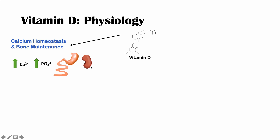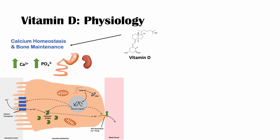How does calcitriol do this in the gastrointestinal system? I have an entire lesson on this pathway — vitamin D and calcium — but briefly, in an enterocyte, a cell of the intestinal epithelium, here is the intestinal lumen and here is the blood vessel.